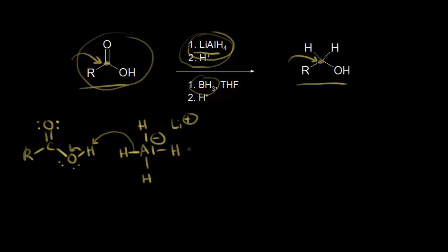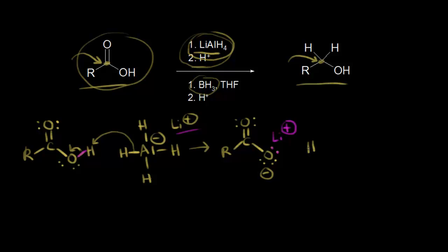An acid-base reaction is probably the first step of this mechanism. If you take a proton from a carboxylic acid, you're left with the conjugate base, which is the carboxylate anion — so a negative one formal charge on this oxygen. We can follow those electrons: the electrons in magenta move onto this oxygen to form our carboxylate anion. Lithium is present, so it's probably going to bond with that oxygen, and we would also form hydrogen gas, H2.